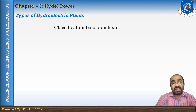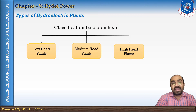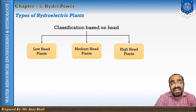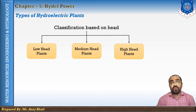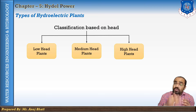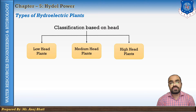The next classification is based on head. There are three categories: low head plants, medium head plants, and high head plants. A low head plant uses a head of less than 15 meters. It is essentially a runoff river scheme where a weir or barrage is constructed to raise the water level. The powerhouse may be constructed in continuation with the barrage.